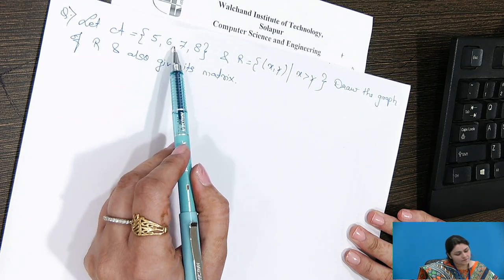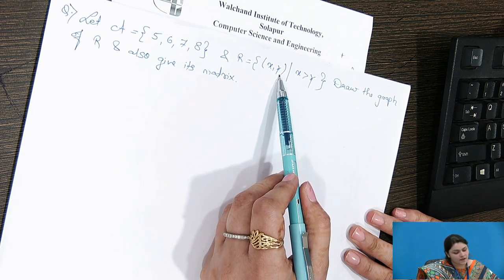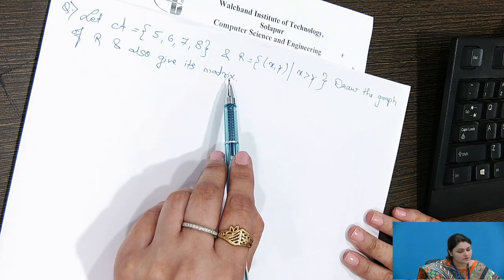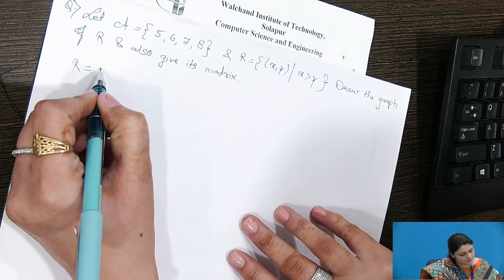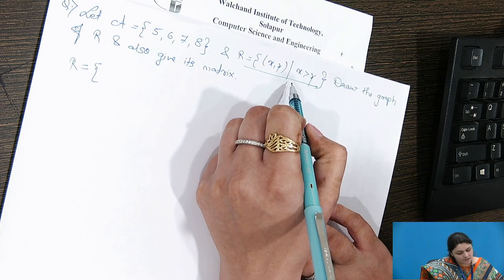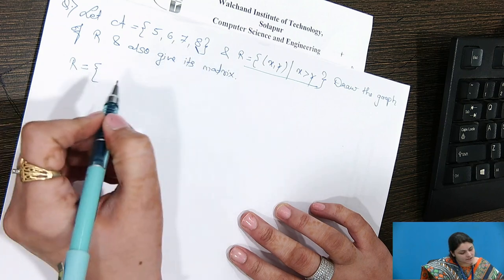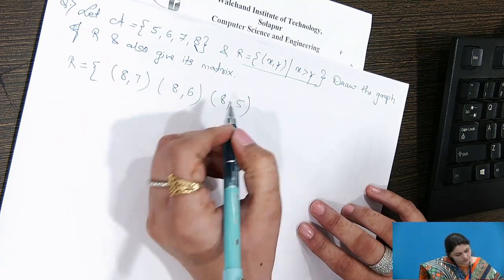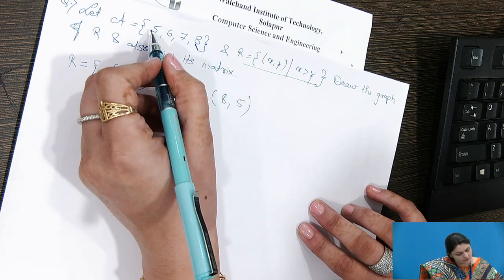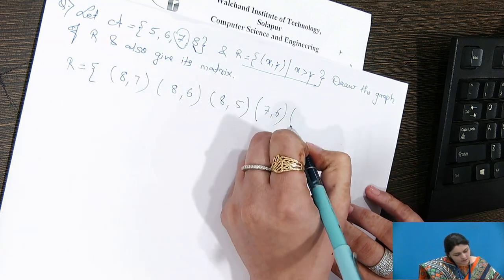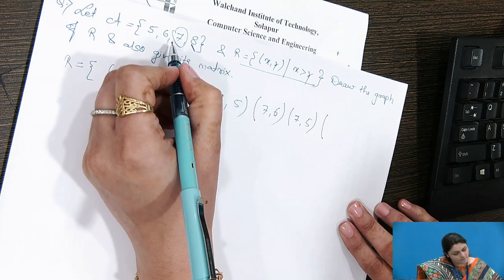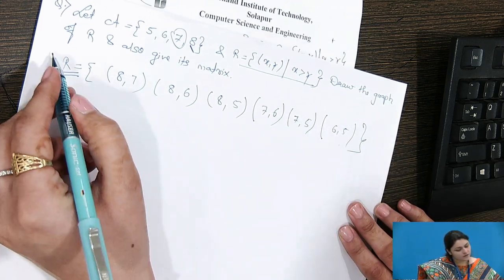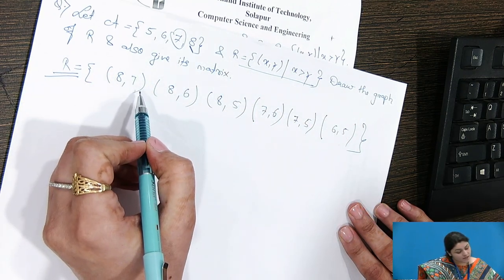Let us take a simple example. Let A equal to 5, 6, 7, 8 and R be the relation such that x is greater than y. We need to draw the graph of R and give its matrix. The condition is that (x, y) must satisfy x greater than y. Starting with the greatest element: (8,7), (8,6), (8,5), (7,6), (7,5), (6,5). This is the relation set where condition x greater than y is satisfied.